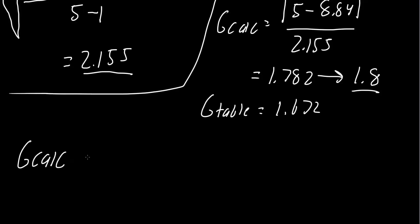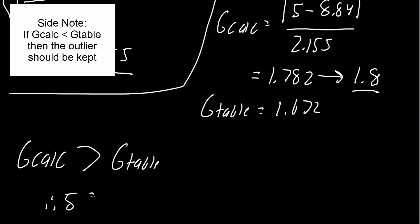Now we check: is Gcalc bigger or smaller than Gtable? Gcalc is bigger than Gtable, and if Gcalc is bigger than Gtable, therefore the outlier should be rejected. Therefore, 5 should be rejected if we want to have 95% confidence. That's all we need to do for this problem.